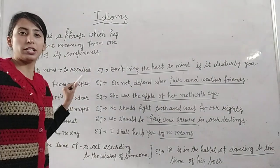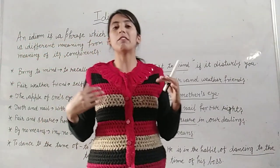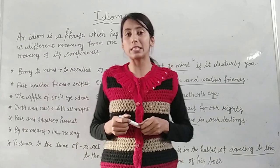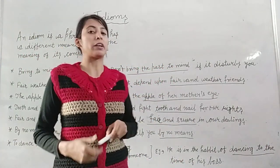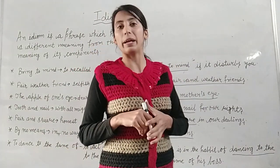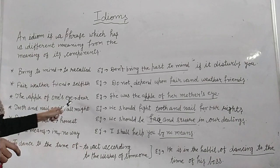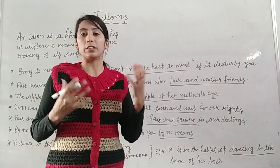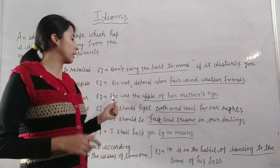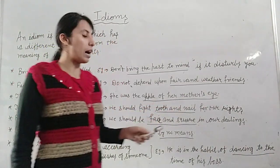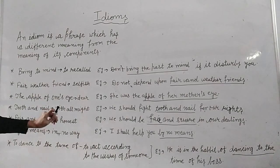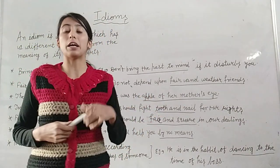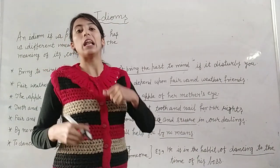Fair-weather friends means selfish — ठीक है जो सिर्फ मतलब के लिए ही आपसे बात करते हैं, जब काम पड़ता है तब ही आते हैं. Don't depend upon fair-weather friends. The apple of one's eye means dear — किसी की आँखों का तारा जो बहुत प्यारा. She was the apple of her mother's eye. Tooth and nail means with all might — हमें अपनी rights के लिए fight करनी चाहिए.